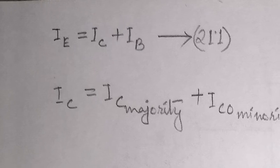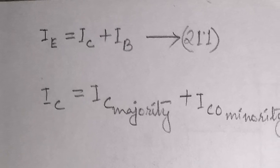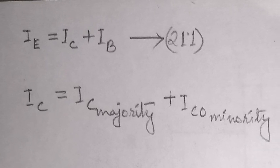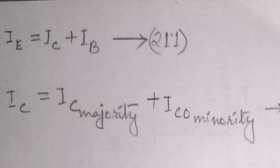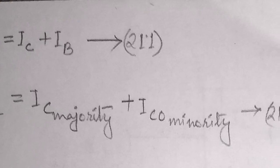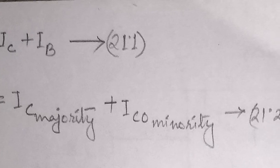Applying Kirchhoff's current law to the transistor, we get emitter current is the sum of collector and base current. However, the collector current comprises of two components, the majority and the minority carriers.